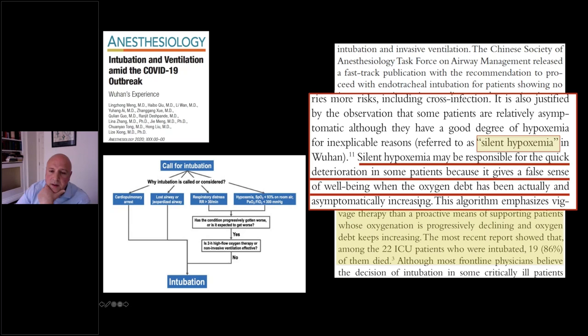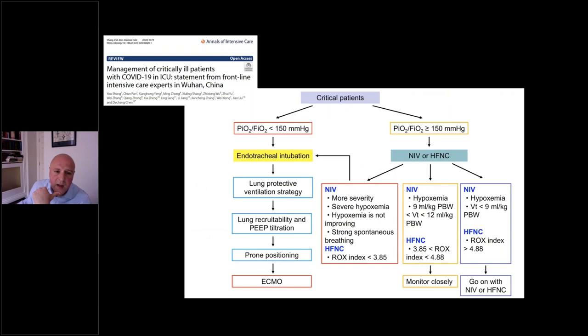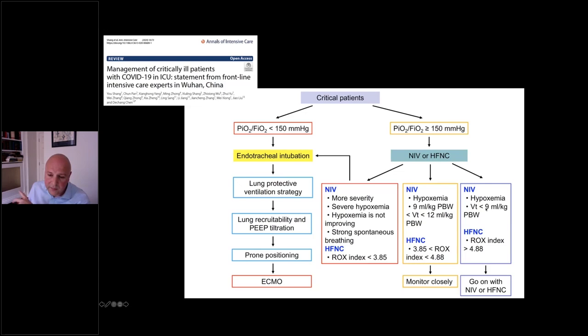Experience from Wuhan physicians showed they used high-flow nasal cannula and non-invasive ventilation for a very limited trial period of up to two hours. If there was no benefit, they progressed to intubation. They were concerned that a large percentage of patients who got intubated late died — 86%. They were concerned that patients with silent hypoxemia might be delayed in intubation because it gives a false sense of well-being when oxygen debt has actually been asymptomatically increasing.